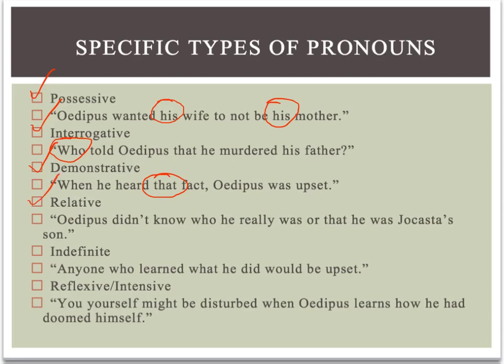Let's talk about relative pronouns. Relative pronouns are a little tricky because we reuse some of the same words we've already used in different pronoun categories. Relative pronouns relate one part of a sentence to another — they form connections. So in the sentence, Oedipus didn't know who he really was or that he was Jocasta's son, there are two relative pronouns: who and that. They relate the clauses — he really was, and he was Jocasta's son — to the rest of the sentence.